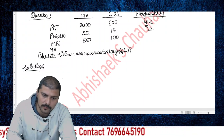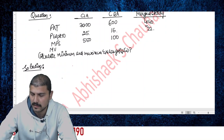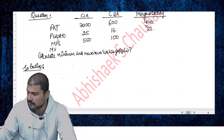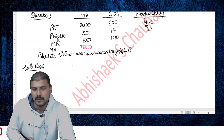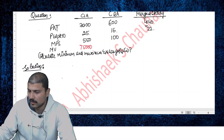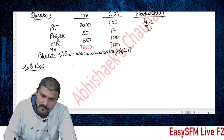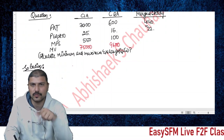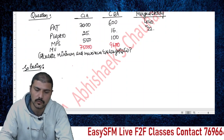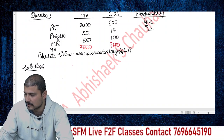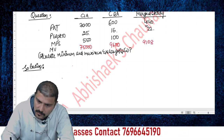Market value calculations: CIA = 3000 × 25 = 75,000. CBA = 600 × 16 = 9,600. Combined merged entity = 4140 × 22 = 91,080.